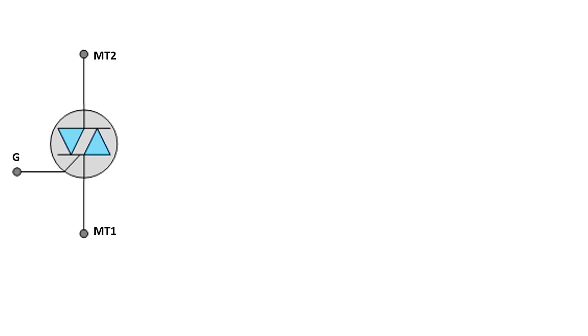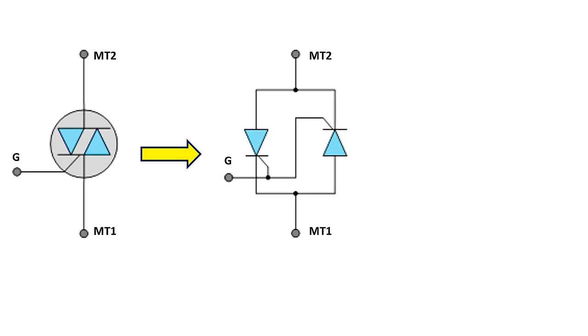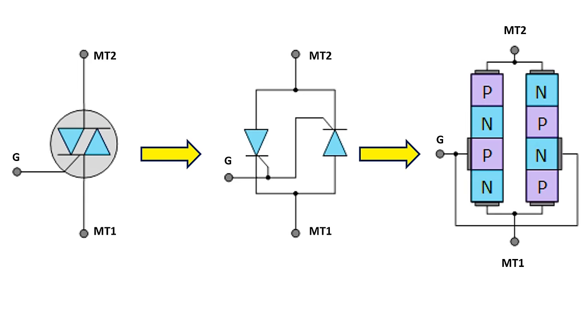When we look at the symbol and its internal structure, we can see that the TRIAC consists of common gate pins and two thyristors connected in reverse parallel to each other. In its physical structure, it consists of connecting two structures in the form of PNPN in parallel.